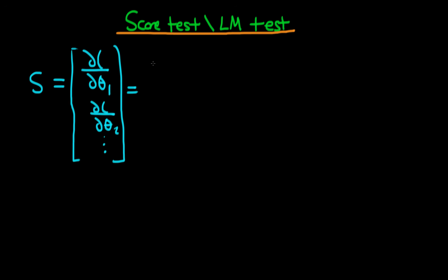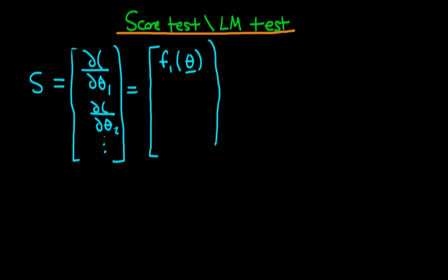The idea is that we might evaluate these derivatives, and they will correspond to functions of the parameters. The first function, from the top derivative, we might represent by F1(θ), where θ is the vector of all parameters in our model. The second element might be represented by F2(θ), and we continue for all other elements. That's what we mean by the score vector.